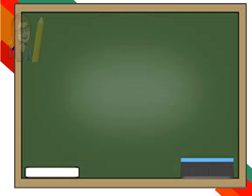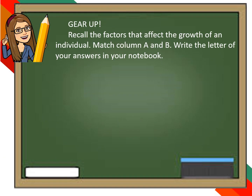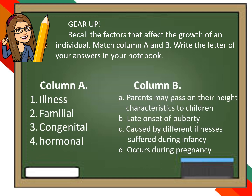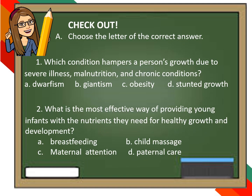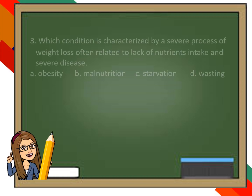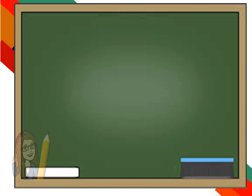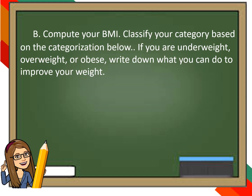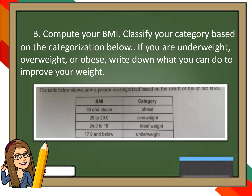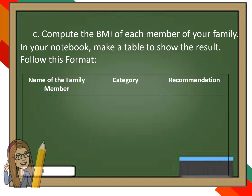Remember! Recall the factors that affect the growth of an individual — match Column A and Column B, and write the letters of your answers in your notebook. Check out: choose the letter of the correct answer. Compute your BMI and classify your category. If you are underweight, overweight, or obese, write down what you can do to improve your weight. Also compute the BMI of each member of your family and make a table in your notebook to show the results.